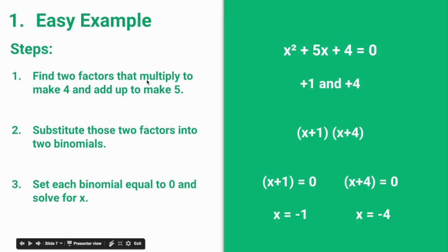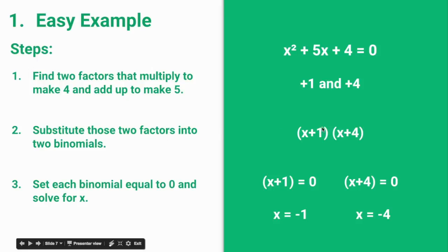We need to find two factors that multiply to make 4 and add to equal 5. Substituting those into the two binomials gives x plus 1 and x plus 4. Setting each binomial equal to 0 and solving for x gives x equals negative 1 and x equals negative 4.